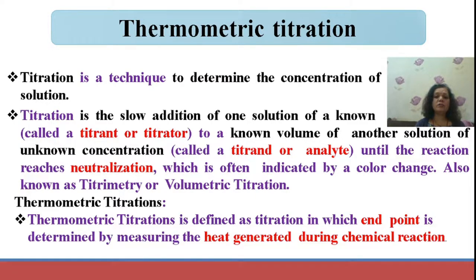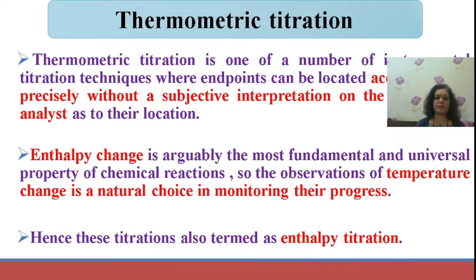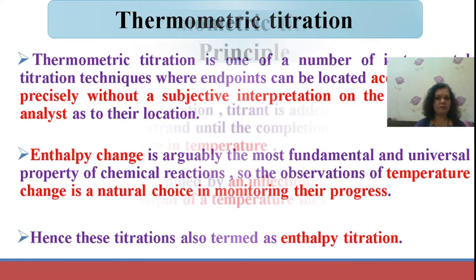The word 'thermo' defines change in heat or the heat generated during the titration. In thermometric titration, we find out the end point by measuring the heat generated during the chemical reaction. This is a technique where the end point can be accurately and precisely found by plotting a graph of change in temperature. The enthalpy change is the most fundamental and universal property of a chemical reaction, and temperature change is a natural choice for monitoring the progress of a reaction. Hence, this titration is also termed enthalpy titration.